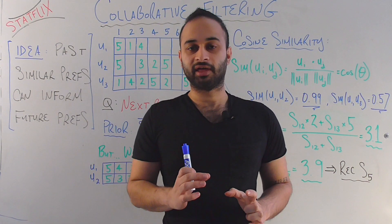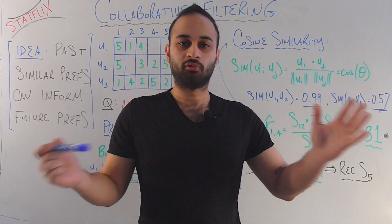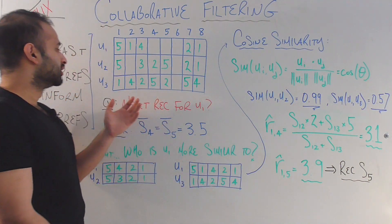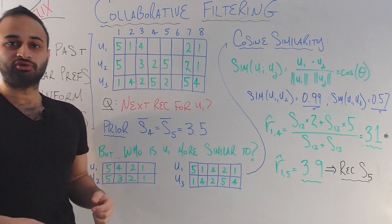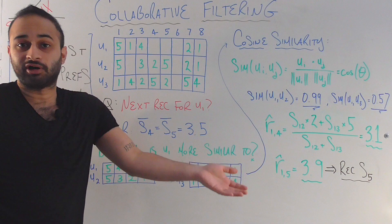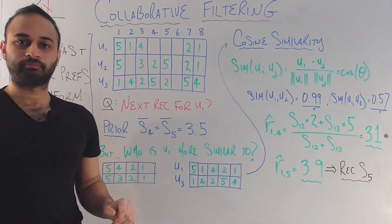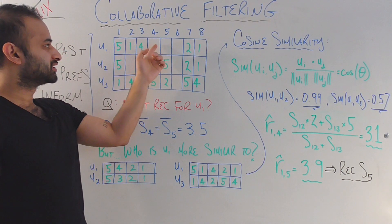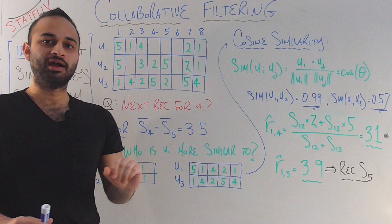Let's look at a small example. We'll assume there are only three users in Statflix and eight shows. That information is captured in a table: rows are user one, two, and three; columns are the eight different shows available. Each user can rate each show between one and five, but many cells are blank because users haven't watched or rated every show. The question is: what should I recommend next to user U1? They've rated five of the eight shows, so they haven't yet watched shows four, five, or six.